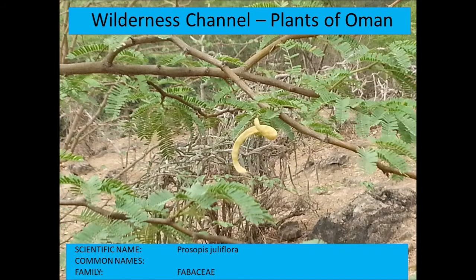Prosopis juliflora is one of the most common introduced species in Oman. It grows in all the desert wadi courses, reproducing vegetatively rather than by seed. It's become quite a problem — very dense, very spiny, and smothers all other vegetation.